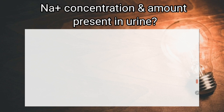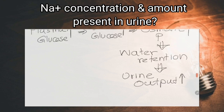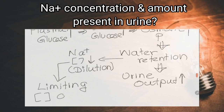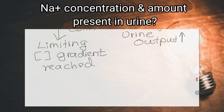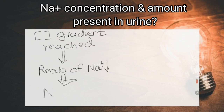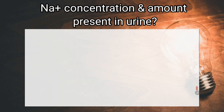What can you say about the sodium concentration and amount of sodium present in the urine in this condition? As the volume of tubular fluid is increased due to osmotic diuresis, the concentration of urine is decreased due to dilution. This increases the gradient out of the lumen against which sodium is pumped, and eventually the limiting concentration gradient is reached and sodium reabsorption decreases. So the amount of sodium ions present in urine will increase.